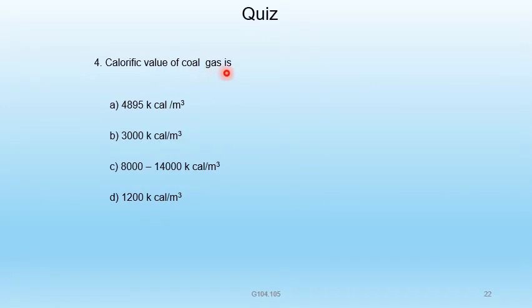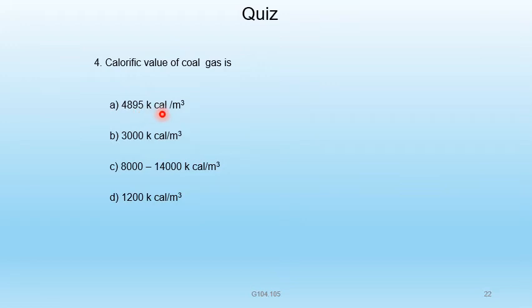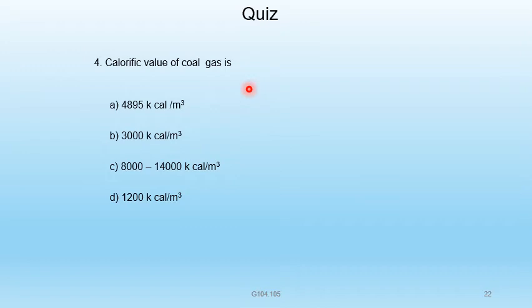Question 8 — Calorific value of coal gas is: A) 4895 kcal/m³, B) 3000 kcal/m³, C) 8000 to 14000 kcal/m³, D) 1200 kcal/m³. The calorific value of coal gas is 4895 kilocalories per meter cube. A is the correct answer.